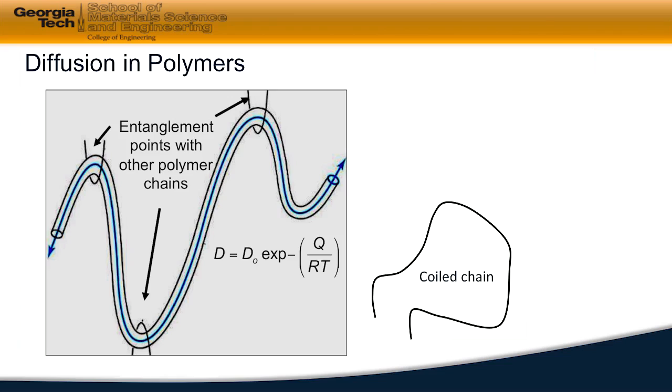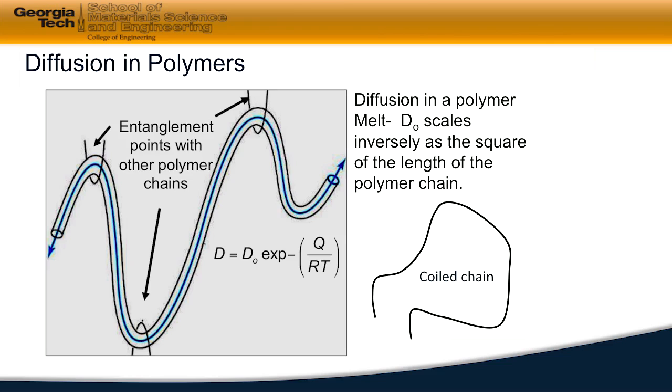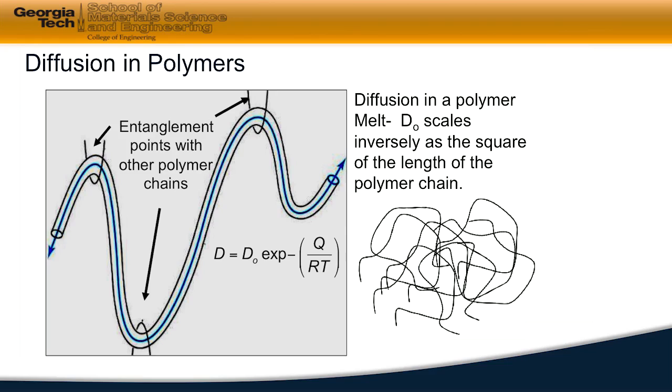The process of diffusion then is written again as an Arrhenius expression. Now this time what we see is that the coefficient that is in front of the exponential term scales inversely with respect to the length of the polymer and therefore its molecular weight.